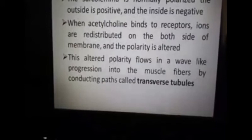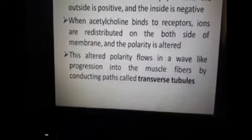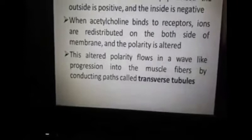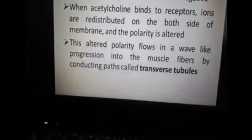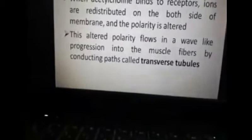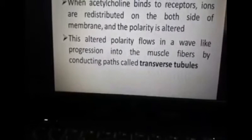The sarcolemma is normally in a polarized condition — the outside is positive and the inside is negative. When acetylcholine binds to receptors, ions redistribute on both sides and polarity changes. This change in polarity produces a wave in the muscle fibers, conducted through transverse tubules.